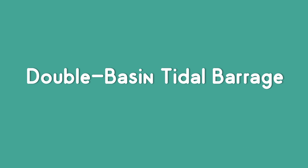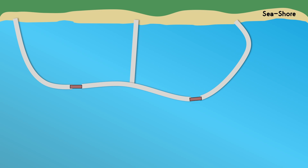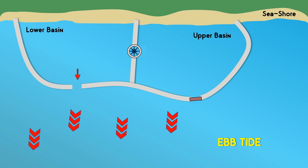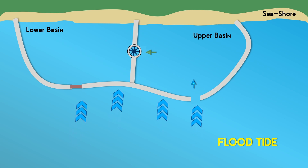Another type of tidal barrage is the double basin type. In this type, we have two basins — the upper basin and the lower basin. A one-way turbine is installed in between the basins. The upper basin is filled with water during the flood tide and the lower basin is evacuated during the ebb tide. The water flows from the upper basin to the lower basin through the turbine, thus generating electricity. This flow is controlled in such a way that continuous power is obtained from the plant without waiting for the tidal sequence.